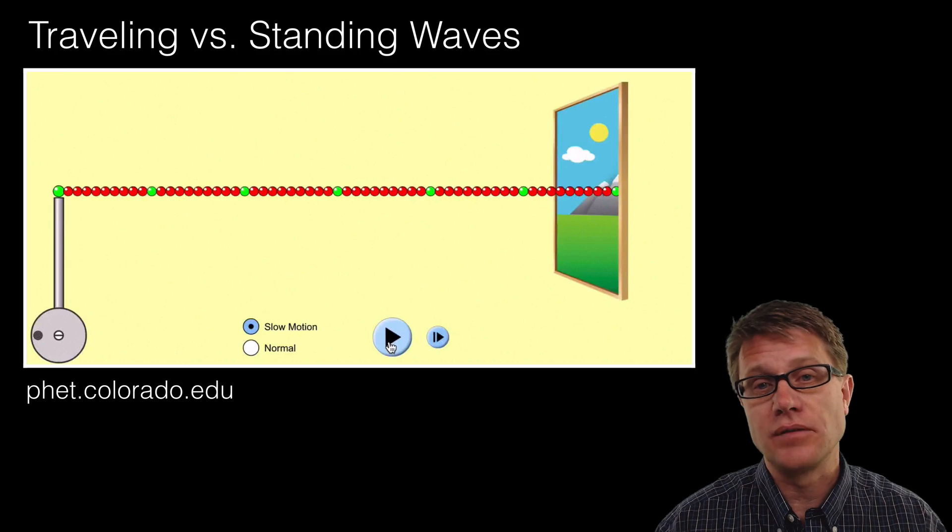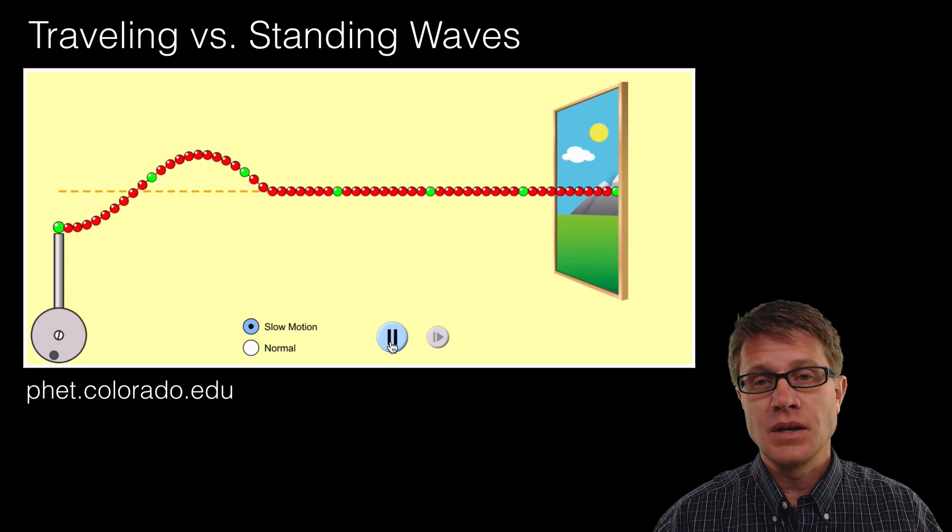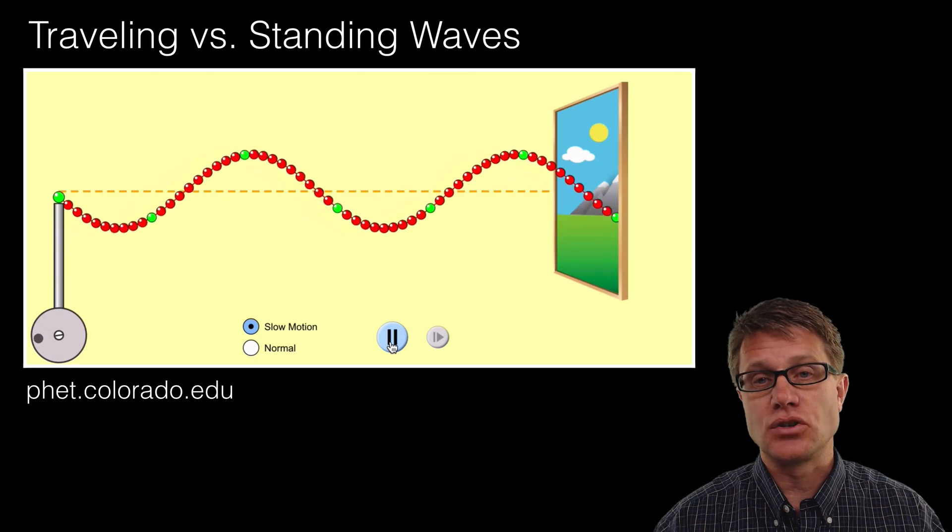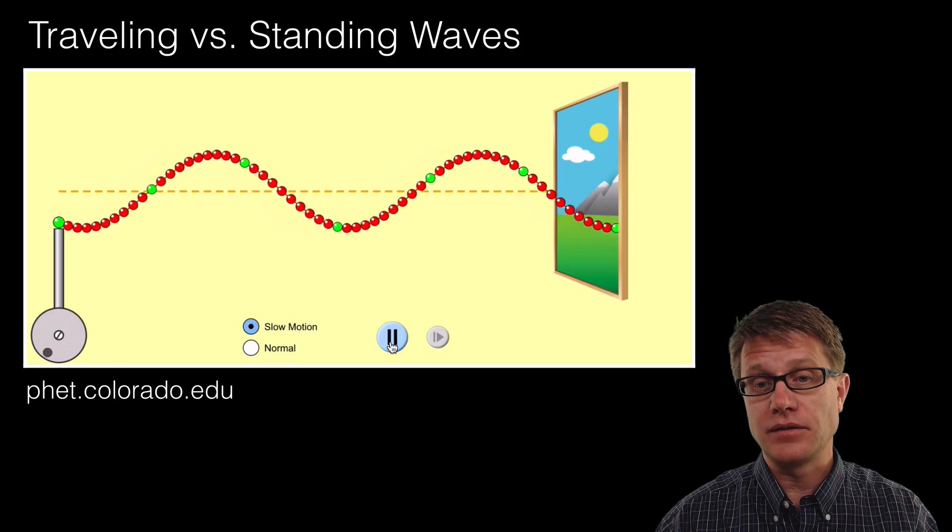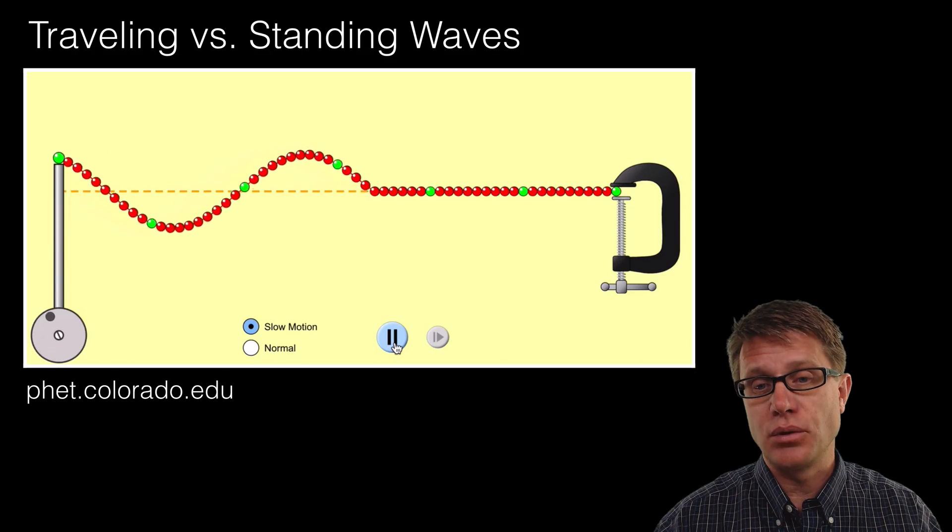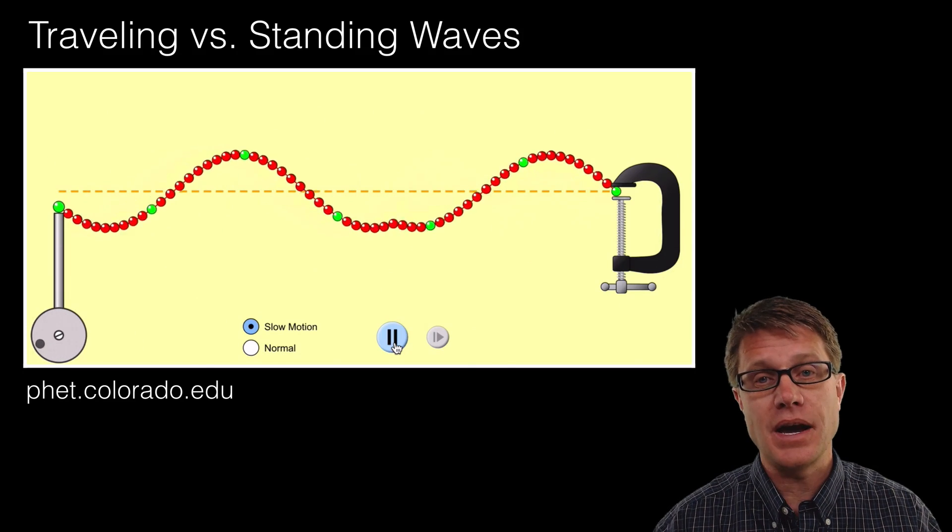So let's look at a traveling wave. This is a PhET simulation. We're creating some waves. In this magical simulation, the waves simply go out the door and go on forever. The traveling waves are created on the left and then they just keep going and going. But what happens if we have a fixed point on the other side? When the wave gets to the other end, it's actually reflected back.